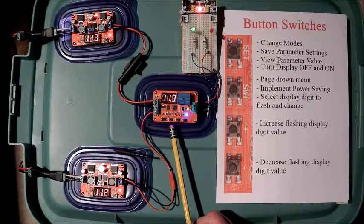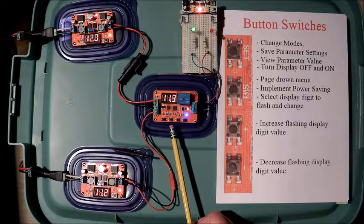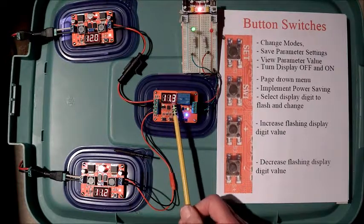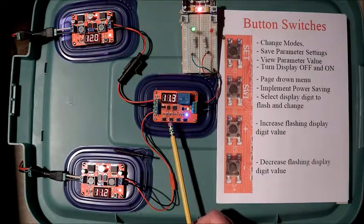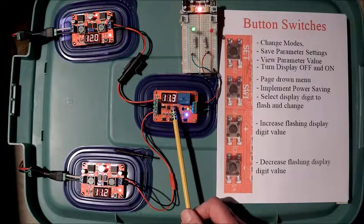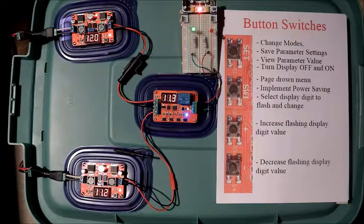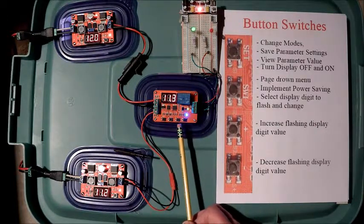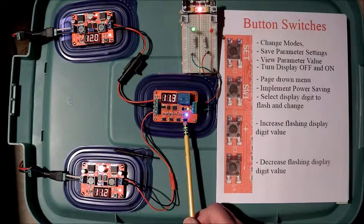SW1 is used to page down the menu, parameter menu. Implement power savings and select the display, select which of the digits, when they are flashing, will be adjusted in value. To adjust your digits in value, you have an increase button and a decrease button.